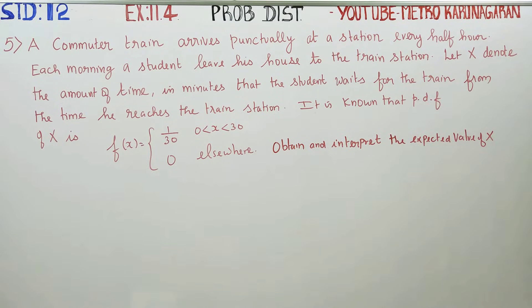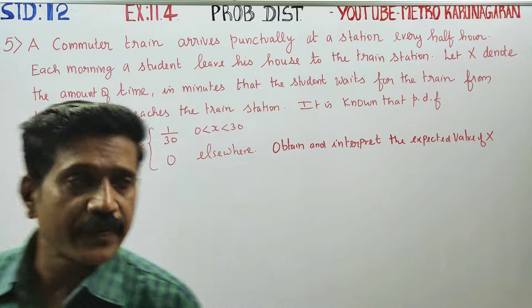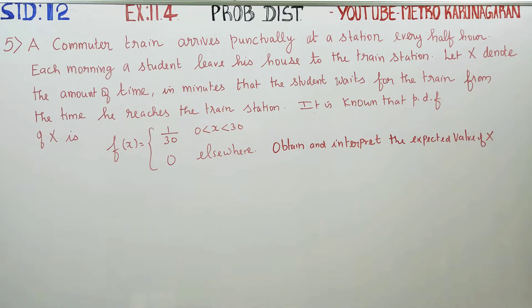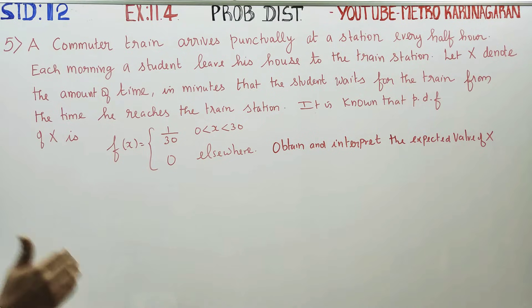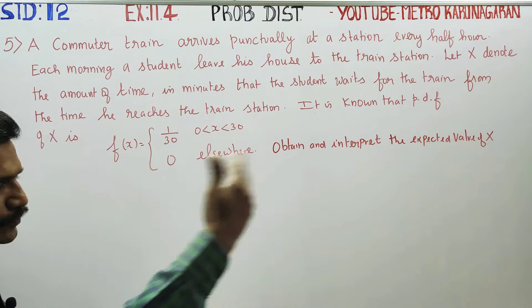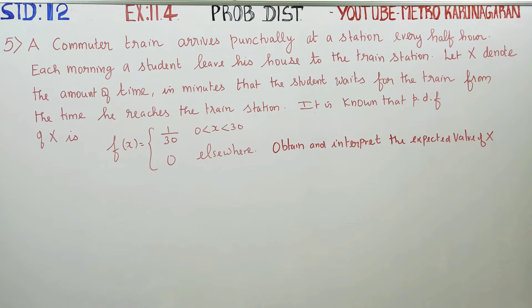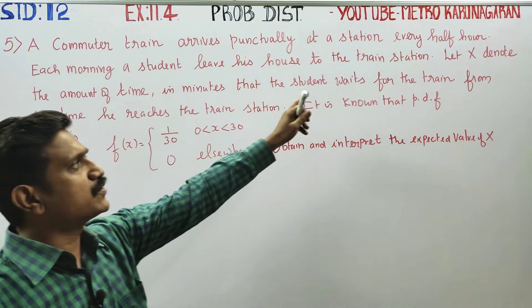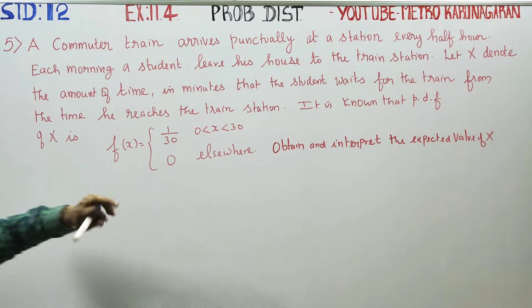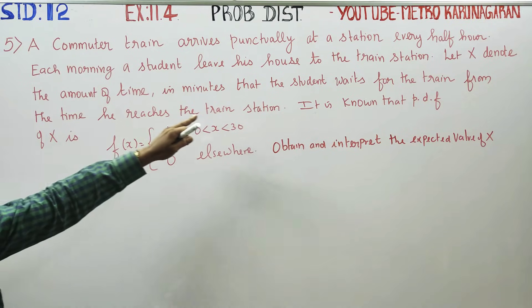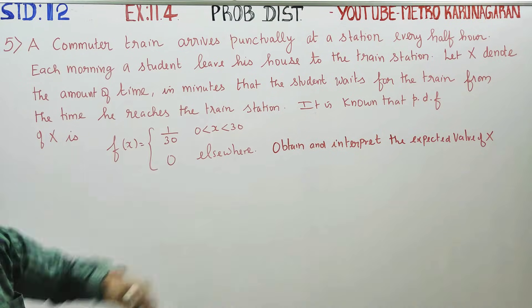Dear 12th standard students, in exercise number 11.4, sum number 5: a commuter train arrives punctually at a station every half an hour. Every morning a student leaves his house to the railway station. Let X denote the amount of time in minutes that the student waits for the train.